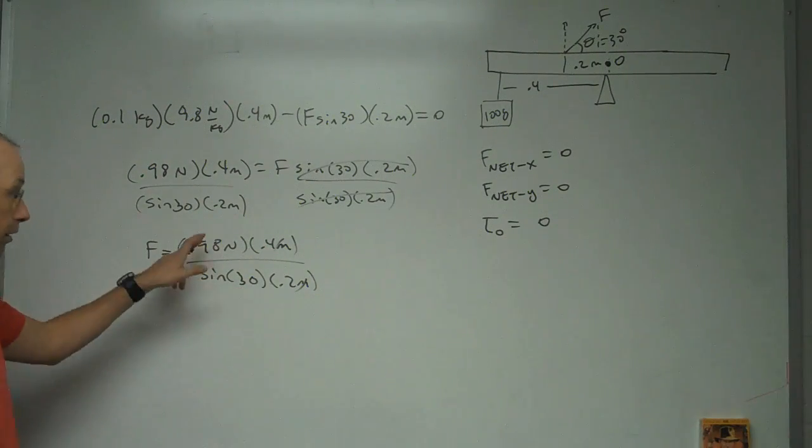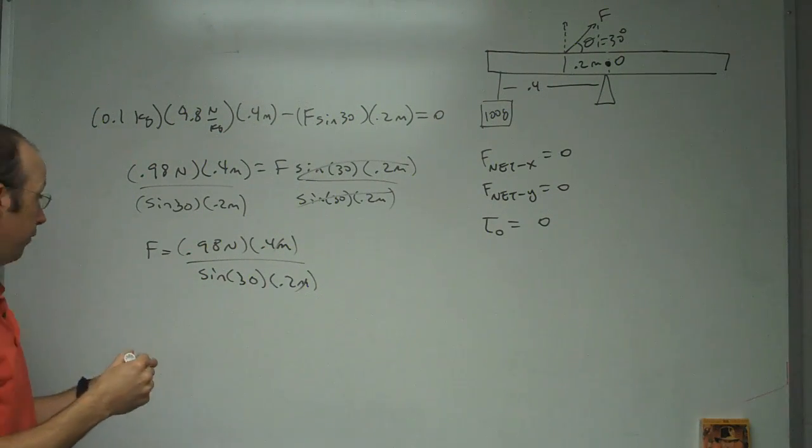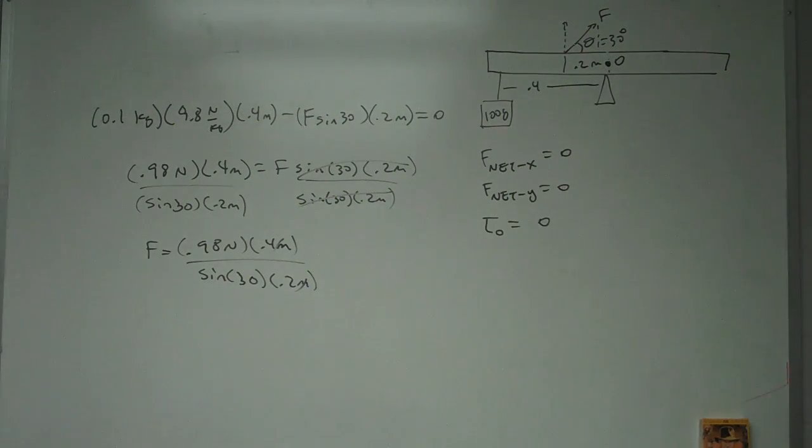And let me just put that in my calculator real quick. I could do it personally in my head, but I don't want to make a mistake. So let's say it's 0.98 times 0.4 divided by sine of 30 degrees times 0.2, and I get 3.92 newtons.